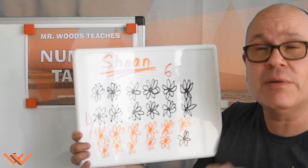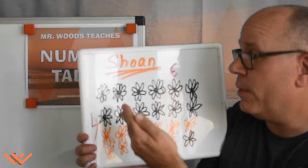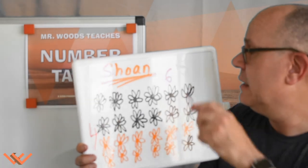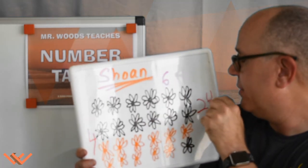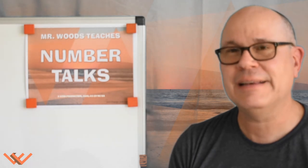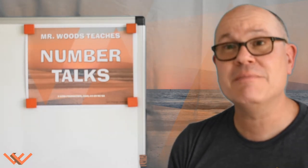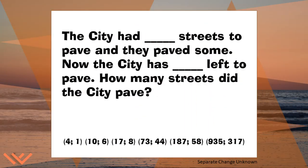So Shone had twenty-four sunflower plants before thirteen died. And that's our answer. Let's thank Shone. Like, share, and subscribe. And remember, to be a math person, all you have to be is a person that does math. Here's a preview of the next Number Talk with Mr. Woods Teaches.